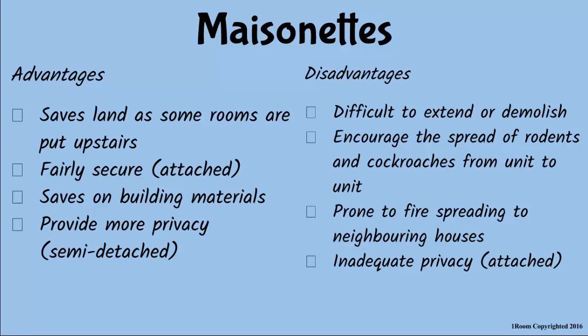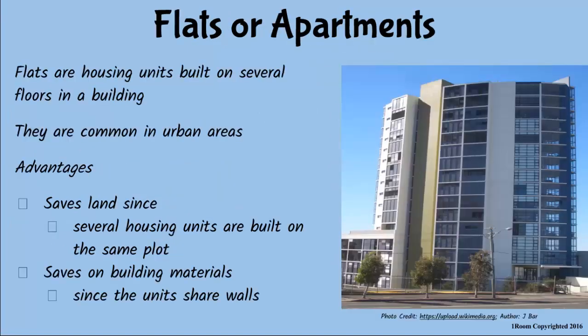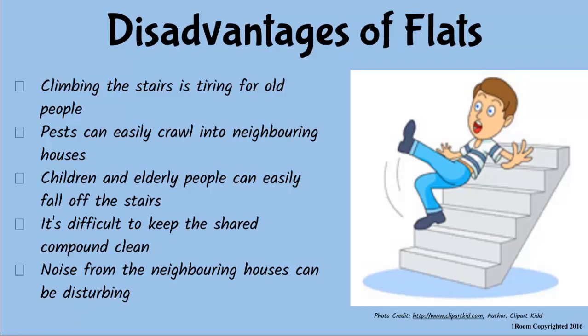Jim asks about the very tall buildings in the city — are those maisonettes too? His mother says no: those are called flats or apartments. Each floor has complete housing units. They are cheaper to build and take up less space. However, climbing stairs is tiresome, especially for elderly people, and children could fall off the stairs. It is also difficult to keep shared spaces like staircases and corridors clean. Like maisonettes, pests can crawl from one unit to another, and noisy neighbors can be a problem.